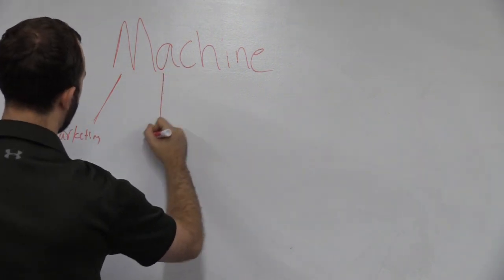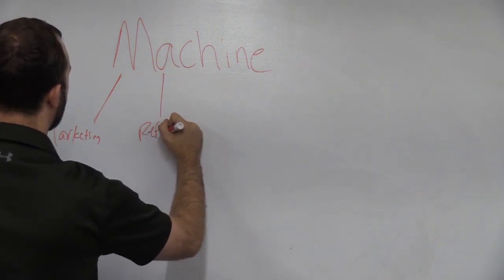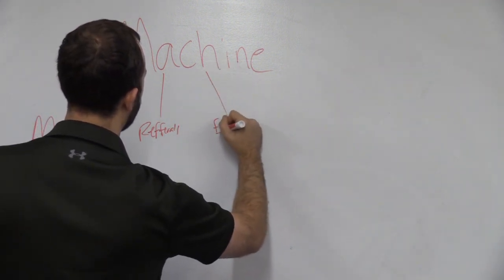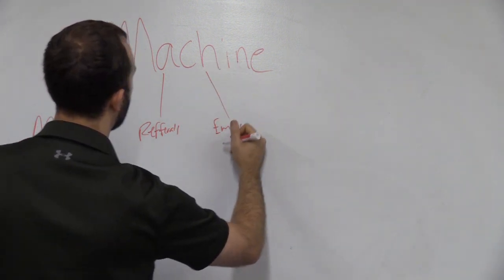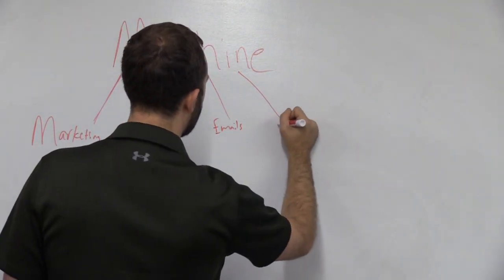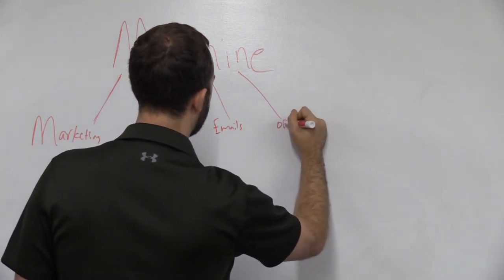We want to have a machine for referrals, emails. We want to have a machine for emails. We want to have a machine set up for offline marketing.